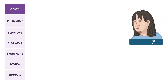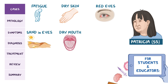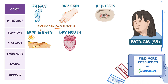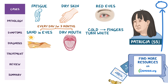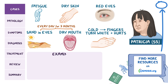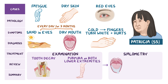On your rounds, you see a 55-year-old female named Patricia, who presents with fatigue, dry skin, and red eyes. She mentions that she's had a recurrent sensation of sand in her eyes and dry mouth every day for the past three months. She also mentioned that when it's cold outside, the tips of her fingers turn white and hurt. On examination, there are signs of tooth decay and purpura on both lower extremities. Sialometry was performed, which detected salivary hypofunction.